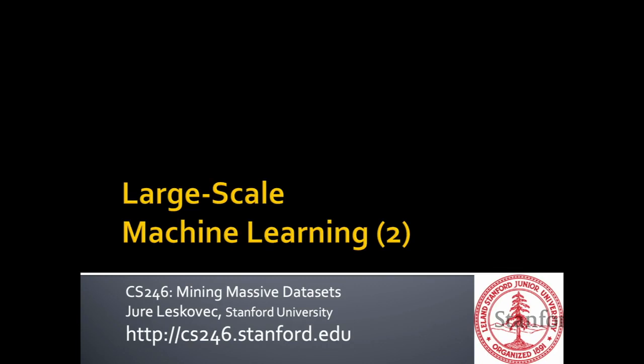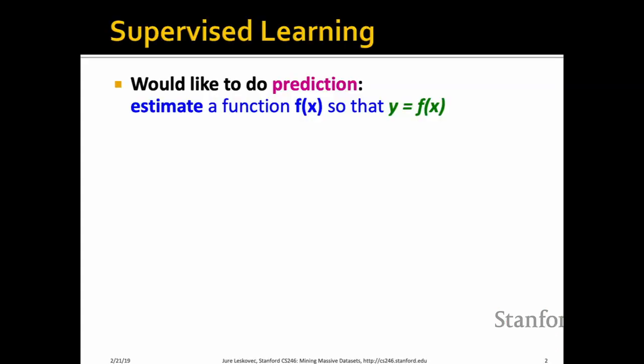What are we going to talk about today? On Tuesday, you covered the first set of techniques for large-scale machine learning in CS 246. We saw how to build decision trees and scale them for very big datasets, and we talked about a system developed by Google roughly 10 years ago. Today, we're going to focus more on SVMs — support vector machines — an overview of stochastic gradient descent, more advanced techniques, and at the end of the lecture, how to parallelize those techniques to work with very large datasets.